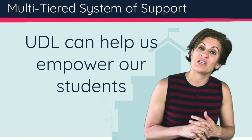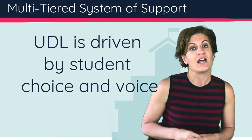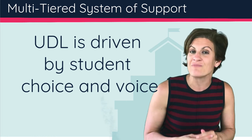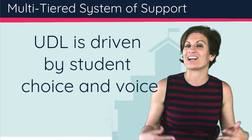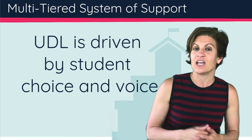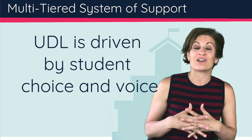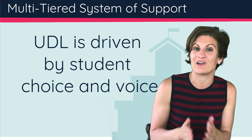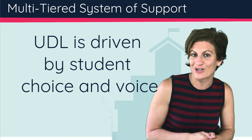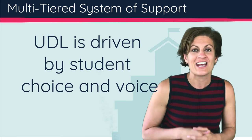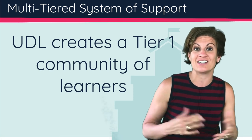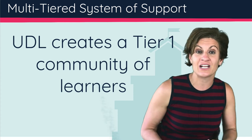The most important thing about UDL is how it's driven by student choice and student voice. If we're going to honor everything that students bring to the table and all of their strengths, we need to allow them time to reflect on what their strengths are, what's important to them, how they want to learn, how they want to share what they know, and how they're going to collaborate with each other. Then we can create a learning community that really works for all learners. Whereas if we're focused on traditional education, my dominant culture will generally drive the learning environment because I've made choices about what I feel should be covered. There is no way to truly honor every student without empowering them to make suggestions about how they're going to learn, why they're going to learn, and how they're going to show what they've learned. In UDL we're creating a Tier 1 community of learners — something we design together, give each other feedback on, always collaborating, learning and growing.